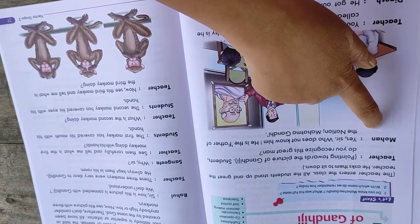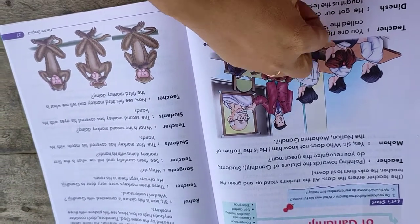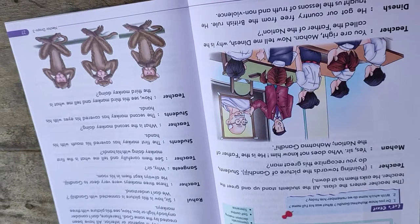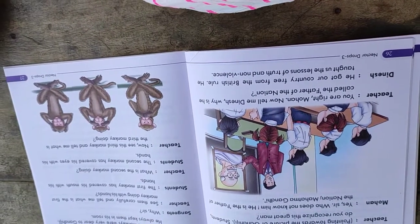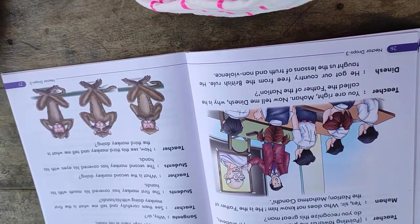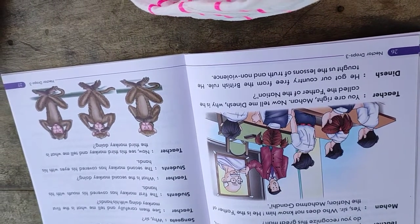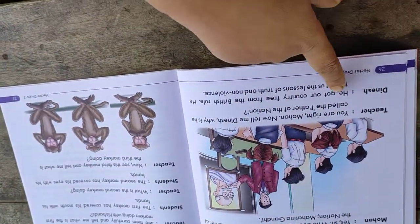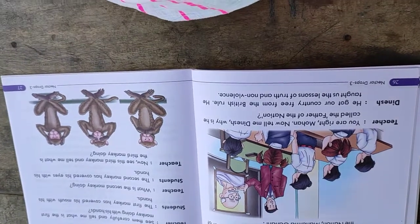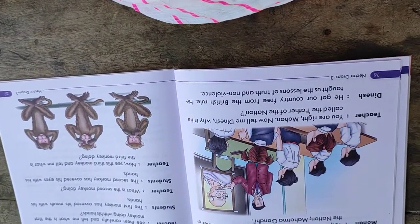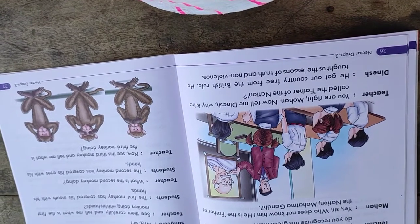So Mohan, a student, says yes sir, who does not know him? He is the father of the nation Mahatma Gandhi. Then teacher says, you are right Mohan. Now tell me Dinesh, why is he called the father of the nation? Dinesh says, He got our country free from the British rule. He taught us the lessons of truth and non-violence.